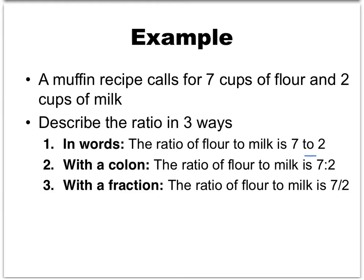We could also describe it with a colon: the ratio of flour to milk is 7:2. That colon means the same thing as the word 'to'. And third, we could describe it with a fraction by saying that the ratio of flour to milk is 7 over 2. Now later on, we'll talk about the relationship between ratios and fractions, but right now we're just using this fraction as another notation to describe a ratio.